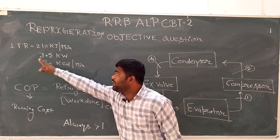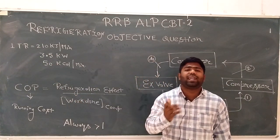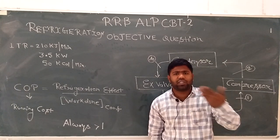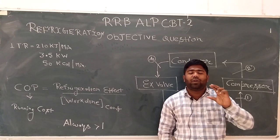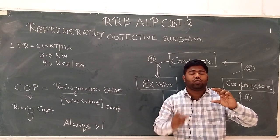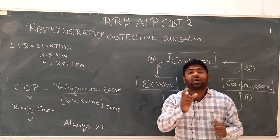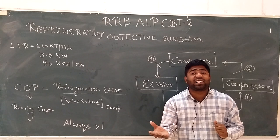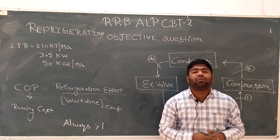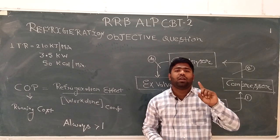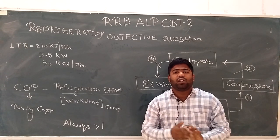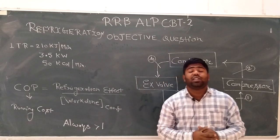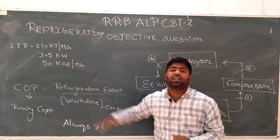First question: 1 TR is equal to what? 1 TR of refrigeration — listen carefully to the definition. 1 ton of ice, in 24 hours, converting from 0 degree centigrade ice to 0 degree centigrade water — the heat required or extracted for this is called 1 Ton of Refrigeration.